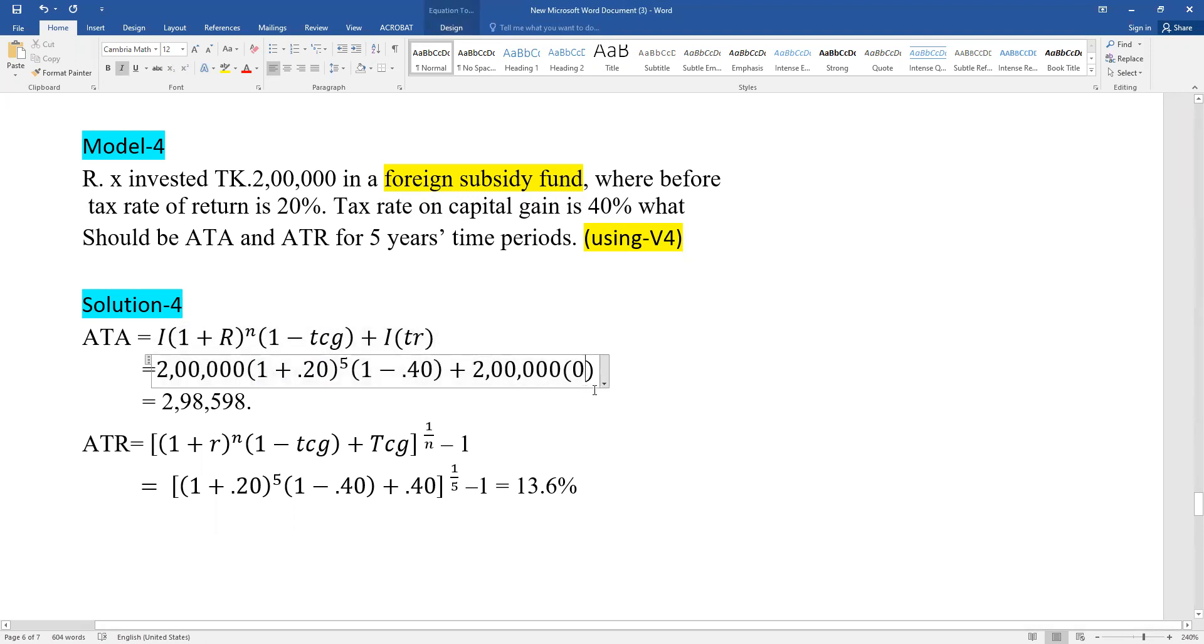The capital gain tax is 40%, but the income tax rate here is zero. So now for the ATR, let's look at the formula.